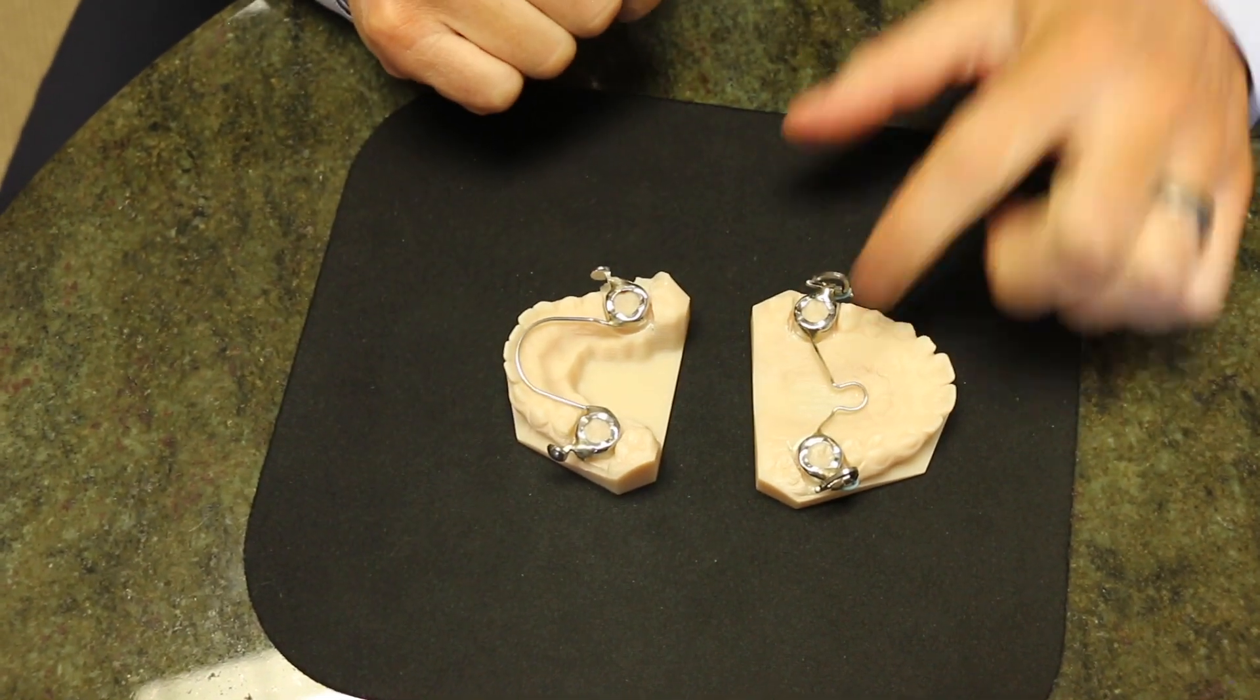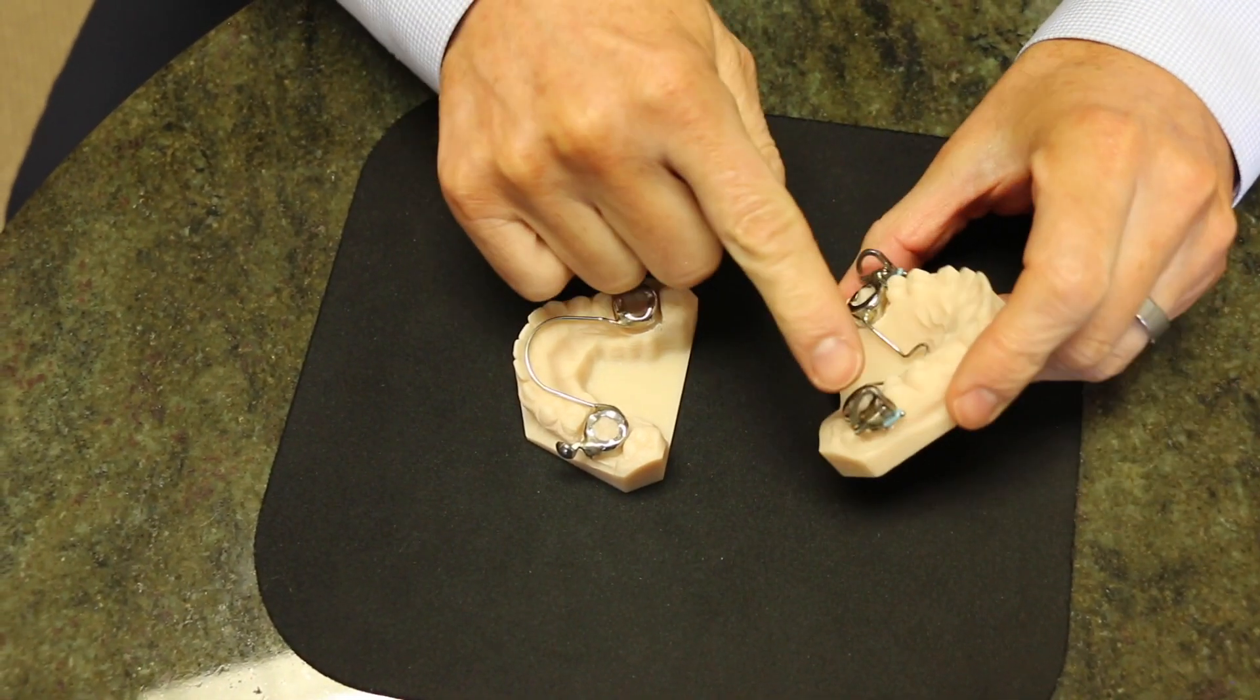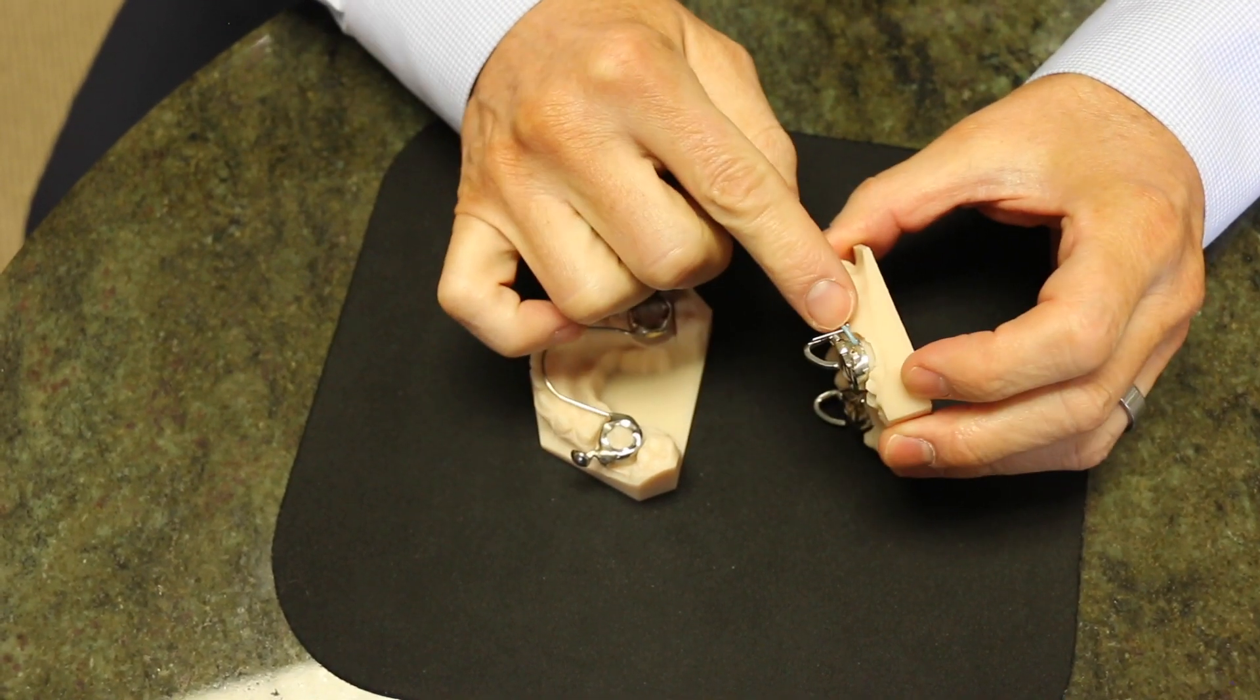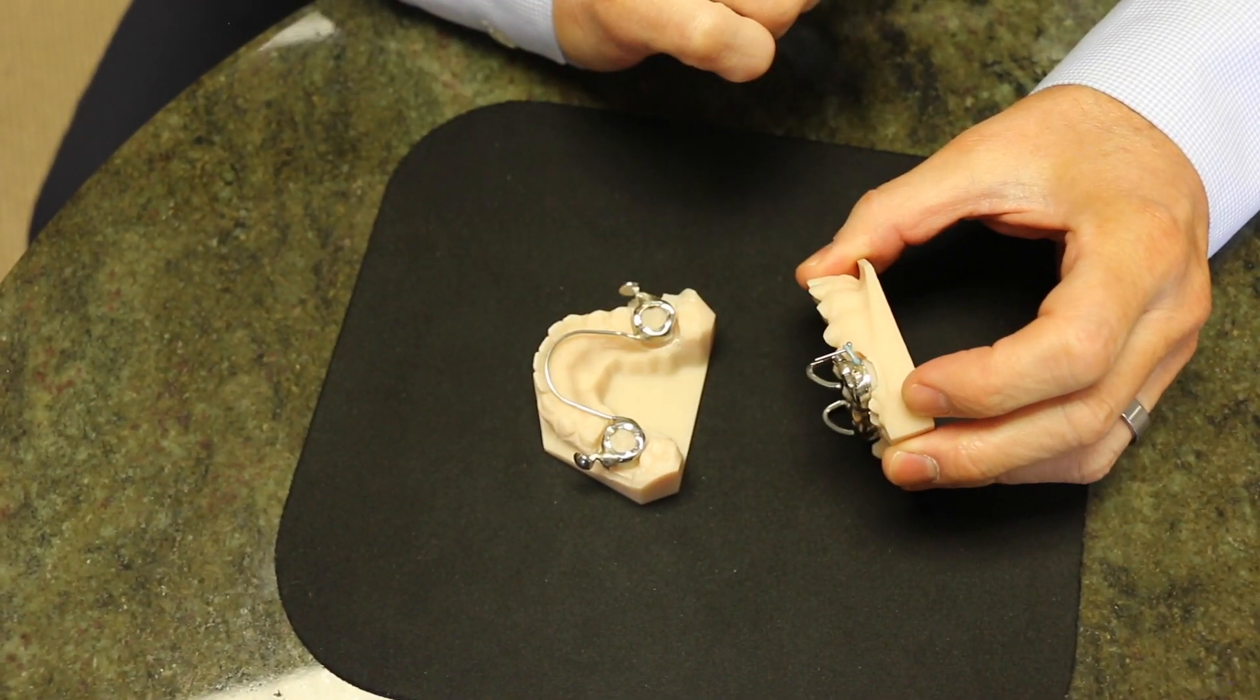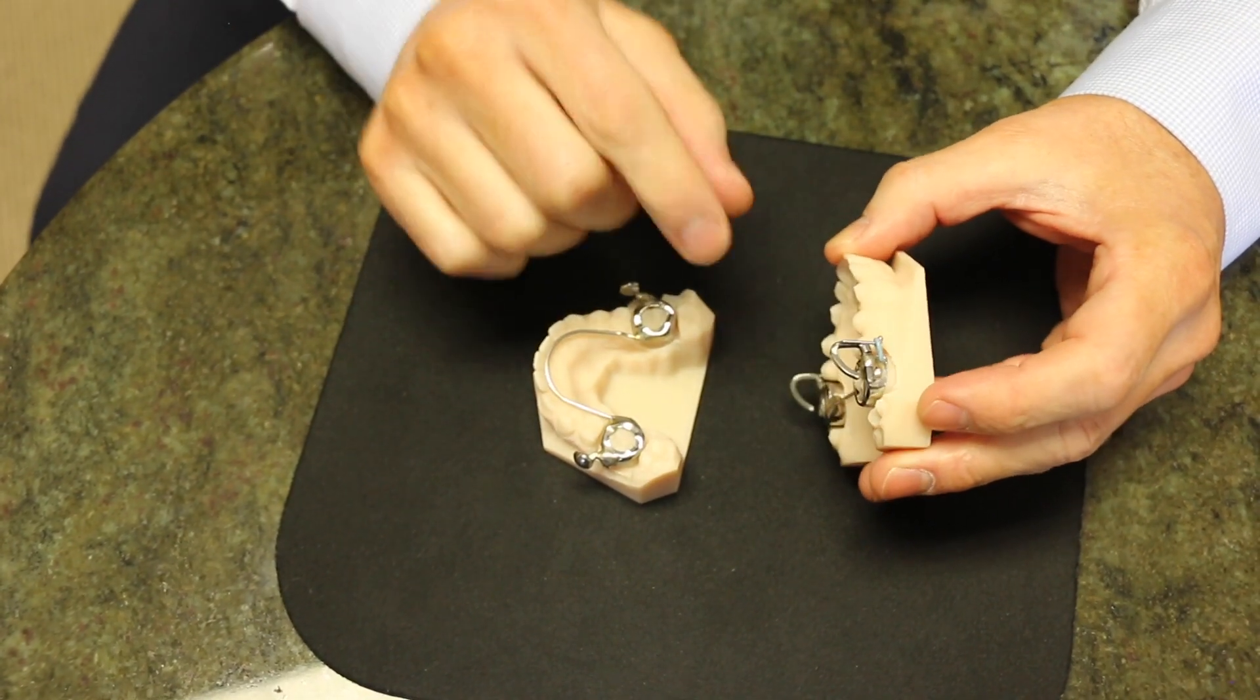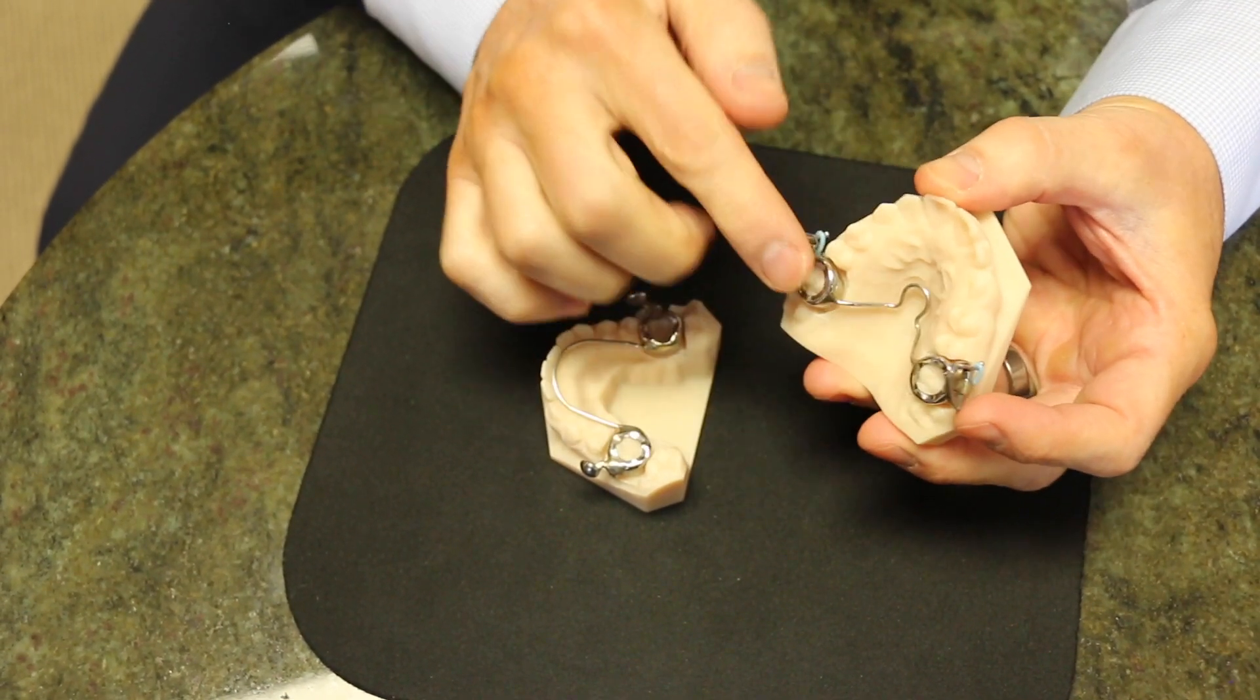It attaches to the molars, the permanent molars in the back, and it has these really odd looking attachments that are removable. We have it attached with a little rubber ring. We call them elbows because they look like an elbow and there's one on each side.